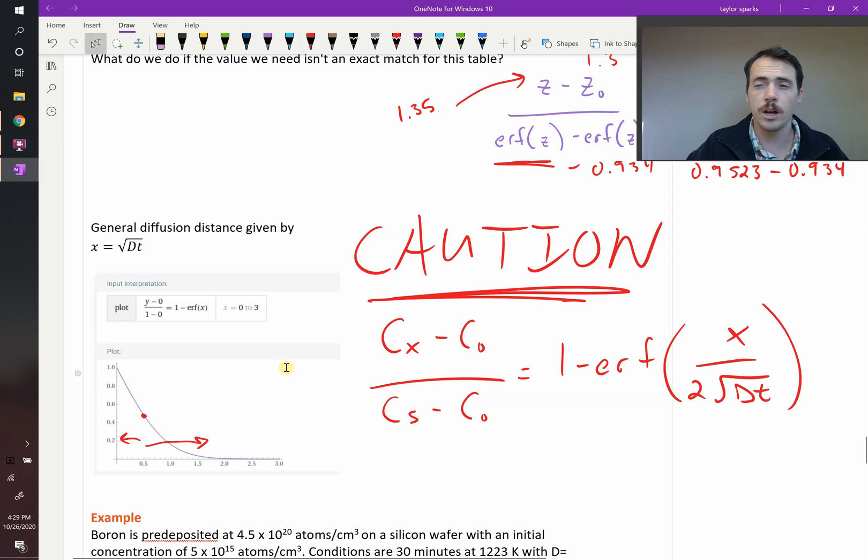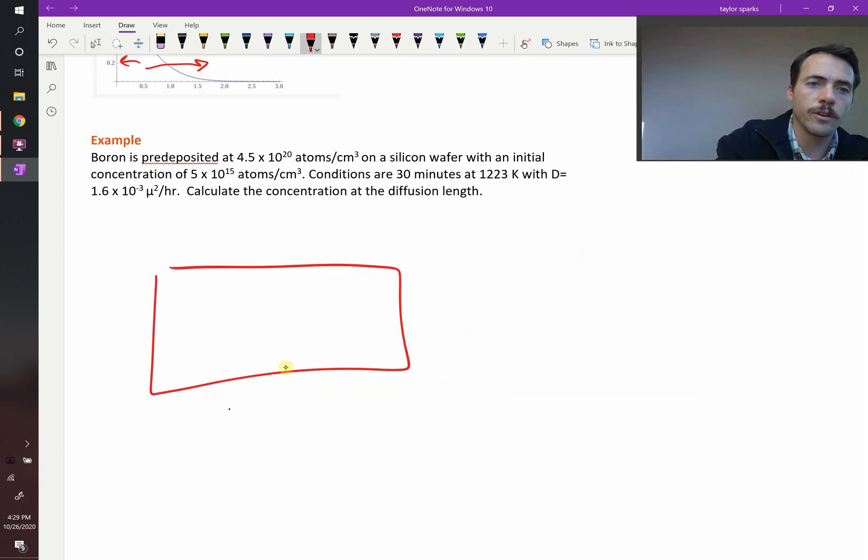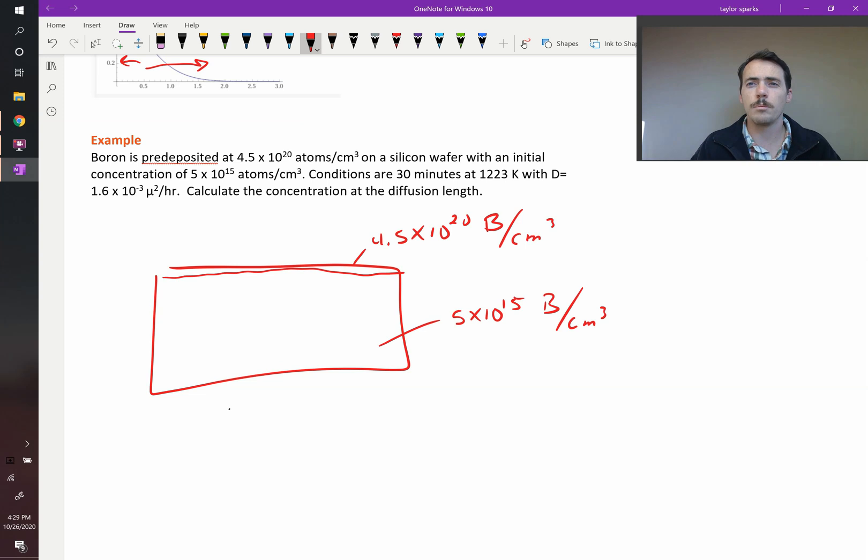Now let's do an example of non-steady state diffusion. It says the following: boron is pre-deposited at 4.5 times 10 to the 20th atoms per centimeter cubed on a silicon wafer with an initial concentration of 5 times 10 to the 15th atoms per centimeter cubed. So what they're describing is this, you've got this wafer, and right here at the surface, you implant 4.5 times 10 to the 20th borons per centimeter cubed. But this silicon deep within it has a value of 5 times 10 to the 15th boron atoms per centimeter cubed. So it was already grown doped, but you're adding much more dopant right at the surface doing this pre-deposition process.